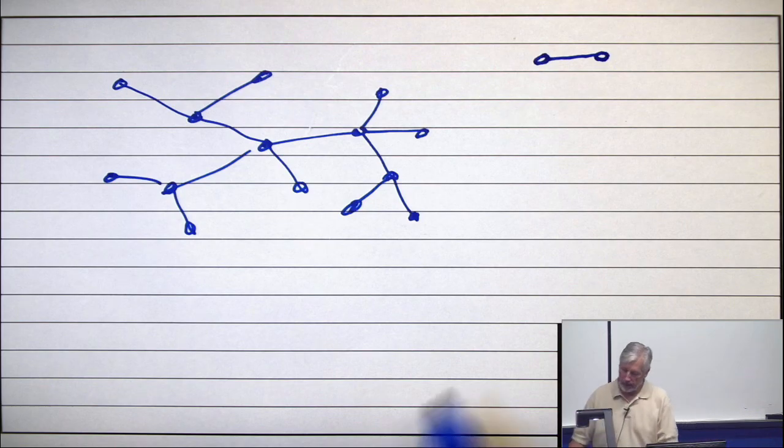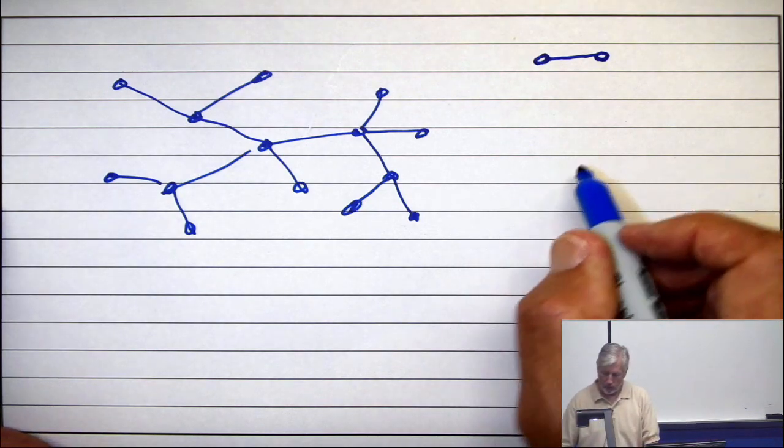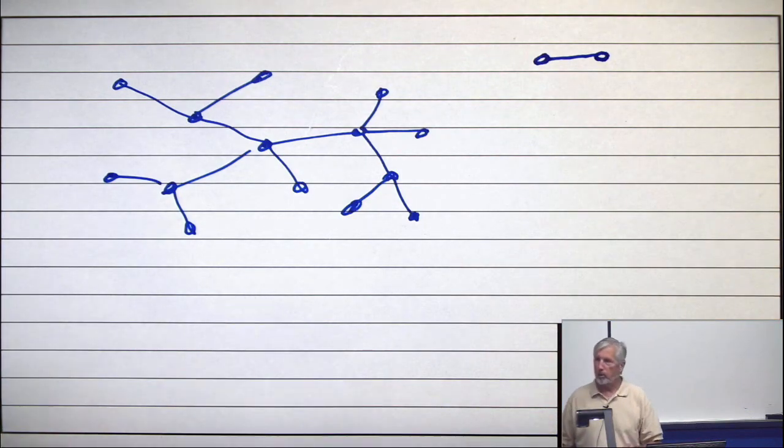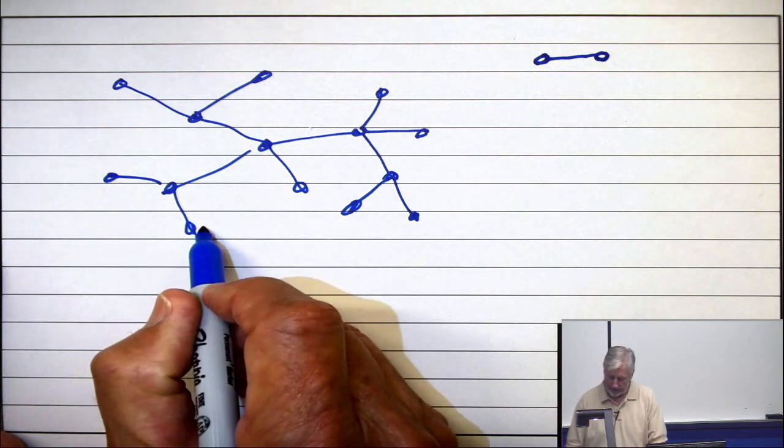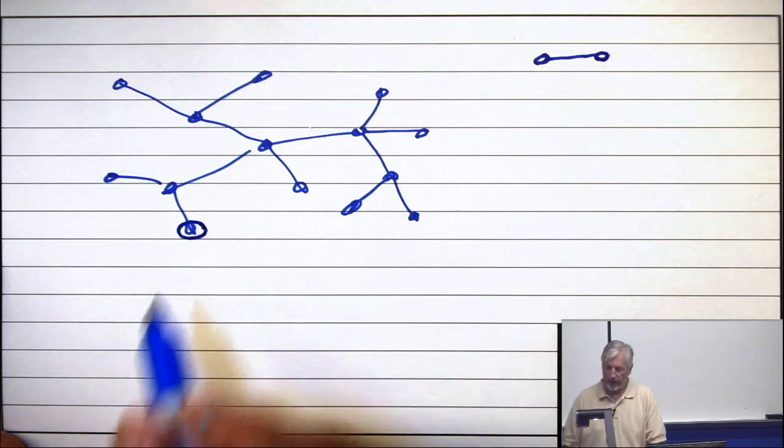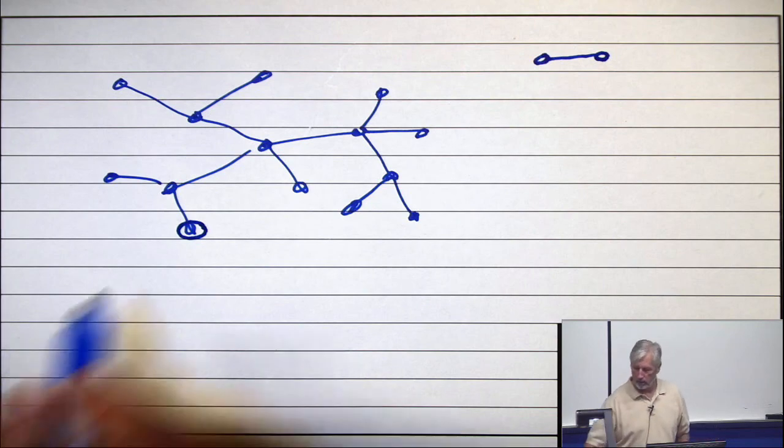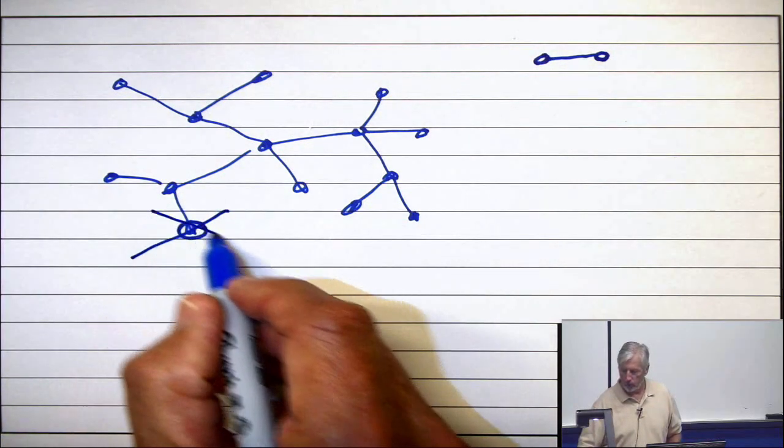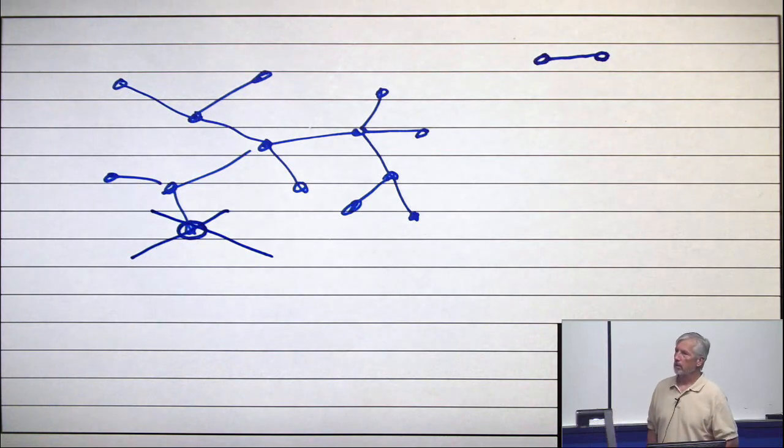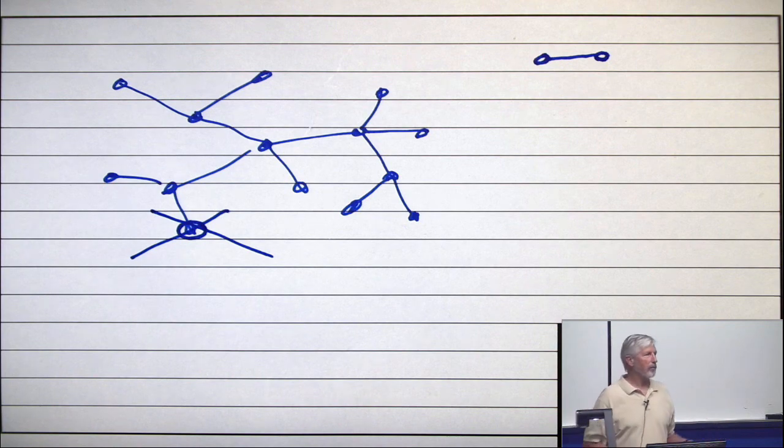All right, now here's what we do for a larger one. What we're going to do is take any leaf. If you take a leaf of a tree and remove it, what's left? A tree. So in what's left, there will be at least two leaves.